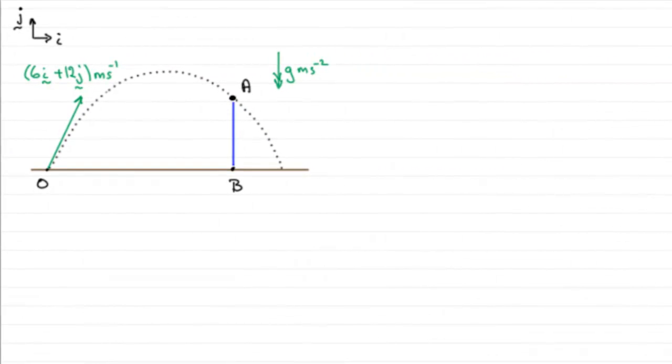Now for this question, we've got a point O that's fixed, a point on this horizontal plane. And a ball is projected from O with a velocity of 6i plus 12j metres per second, where i and j are unit vectors taken horizontally and vertically respectively.